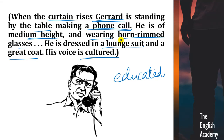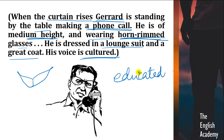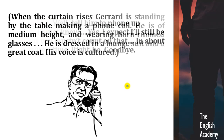Horn-rimmed glasses — alag alag shapes ke frames hote hai, horn-rimmed kaise hue? Aise tikhye tikhye se spectacles, aise shape ke spectacles Gerard ne pahene hue hai. Usne ek lounge suit pahena hai, uske oopar ek great coat pahena hua hai, aur uski voice cultured hai — aisa lag raha hai ki woh ek pada likha insaan hai.